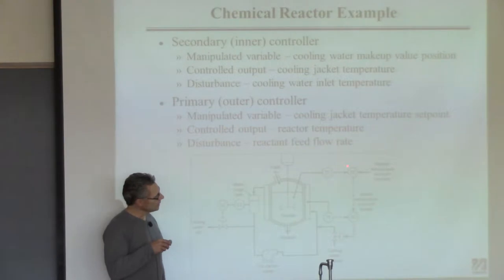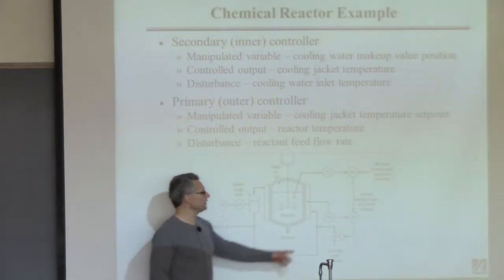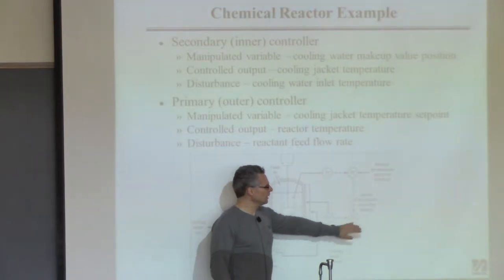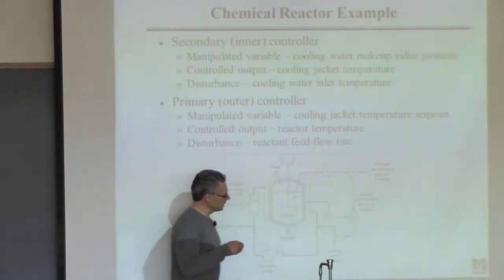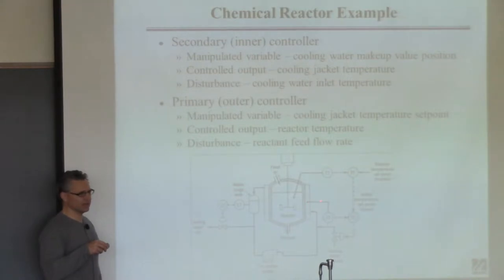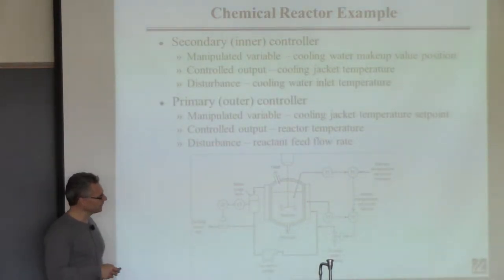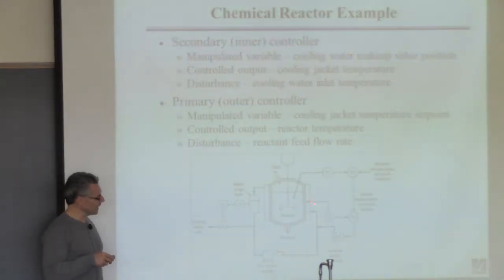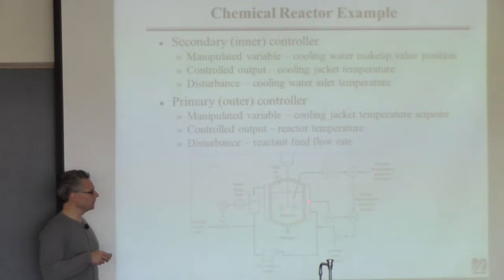And this outer controller just determines what the set point should be for that cooling jacket. What's the advantage of this? Well, if this temperature were to change, you'll see it very quickly in the jacket because the thermal capacitance of the jacket is small compared to the reactor. So the dynamics of the jacket are fast compared to the reactor — you'll see changes in the cooling jacket much more quickly than the reactor.